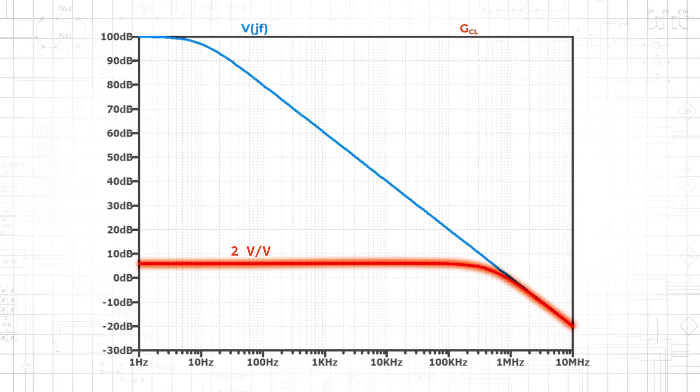Here, the curve representing closed-loop gain stays approximately flat until it approaches the curve representing open-loop gain.